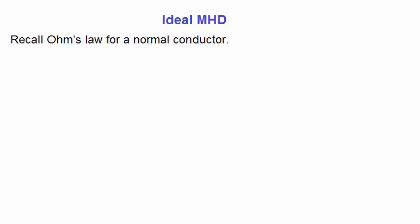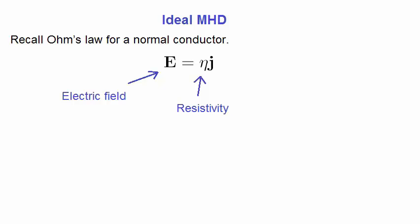Ideal MHD. Recall that Ohm's law for a normal conductor can be written like this, where E is the electric field strength, Eta is the resistivity, and J is the current density. It can be shown that if there is a magnetic field also applied, a generalized Ohm's law can be written like this.